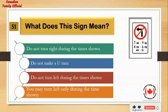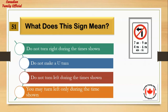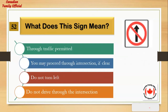What does this sign mean? Number 1: do not turn right during the time shown. Number 2: do not make a U-turn. Number 3: do not turn left during the time shown. Number 4: you may turn left only during the time shown. And the answer is: do not turn left during the time shown.